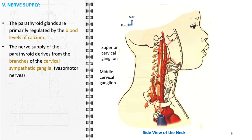A stable blood supply, regulated by sympathetic nerves, ensures that the glands can effectively monitor and respond to changes in blood calcium levels, maintaining the delicate balance of calcium and phosphorus in the body. Understanding the nerve supply of the parathyroid glands is also crucial during surgical interventions in the neck, to avoid unintentional damage to these nerves.